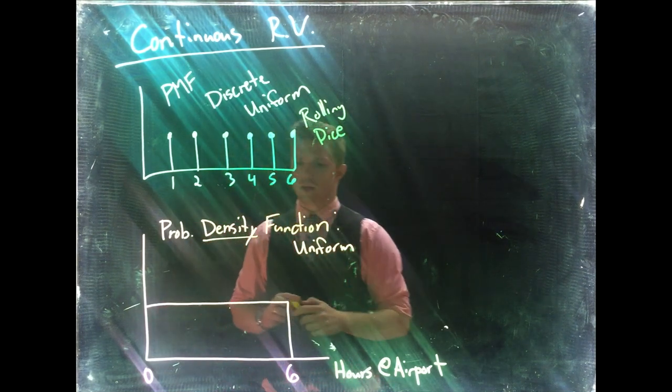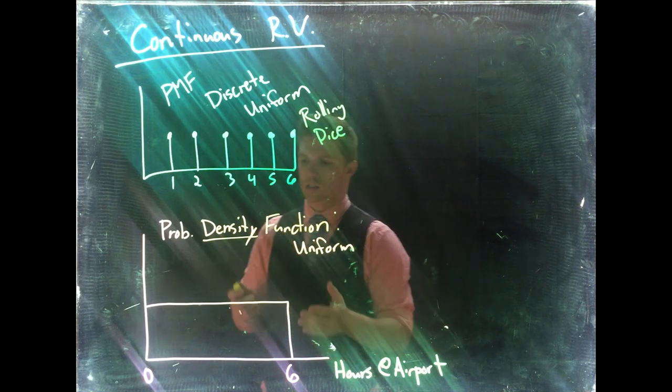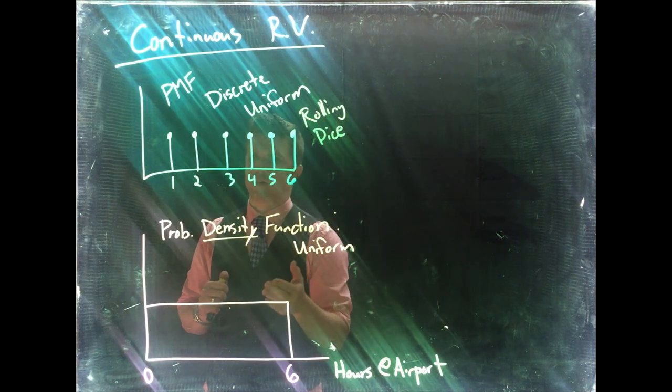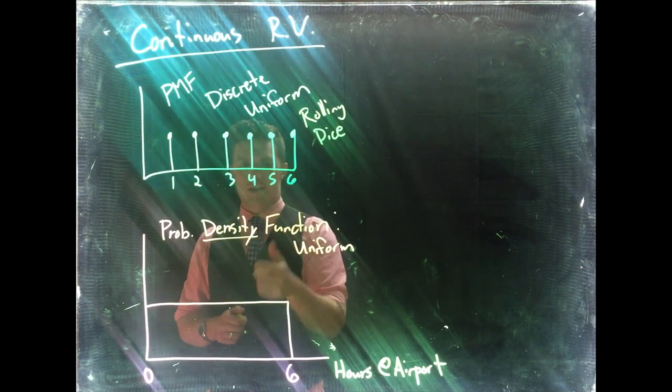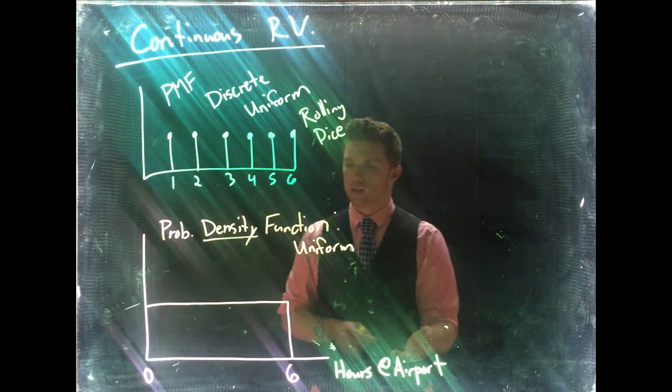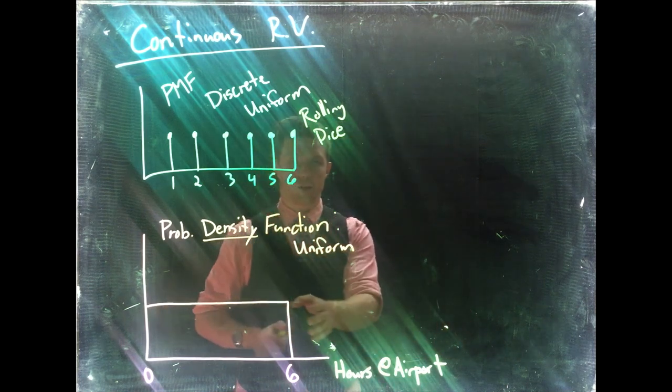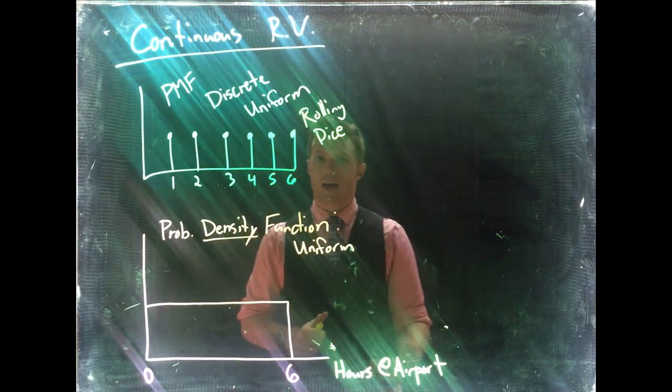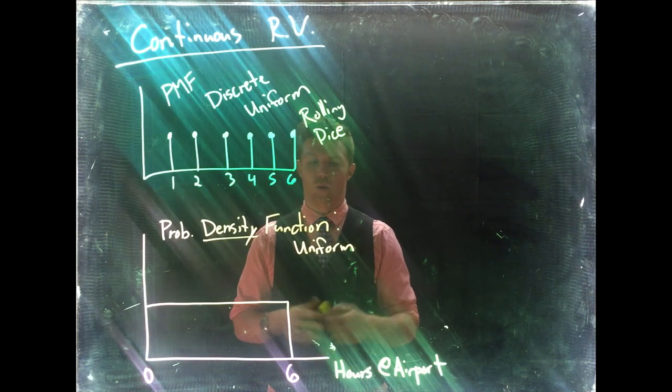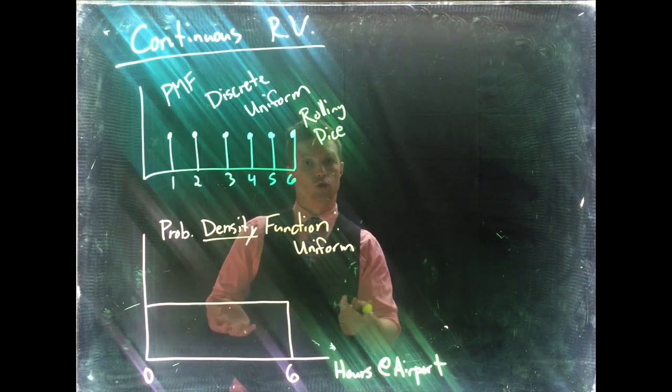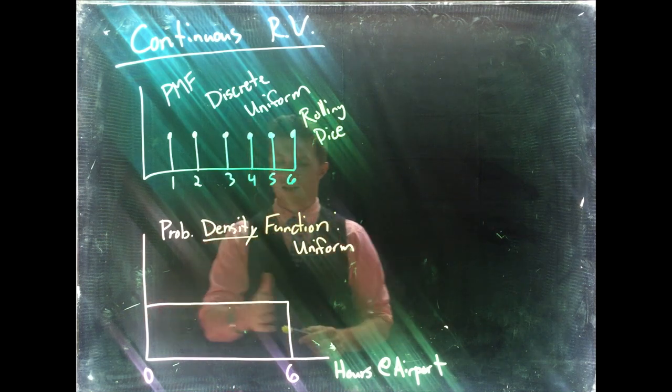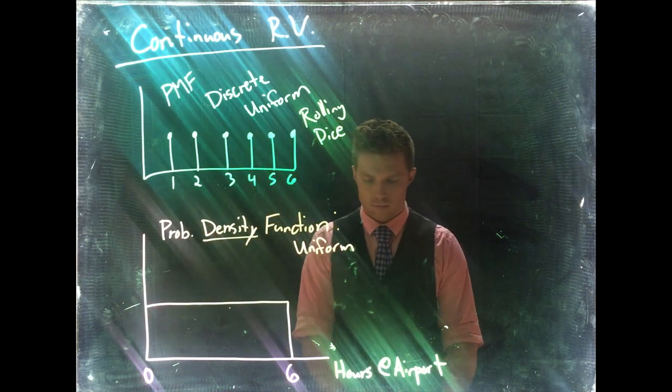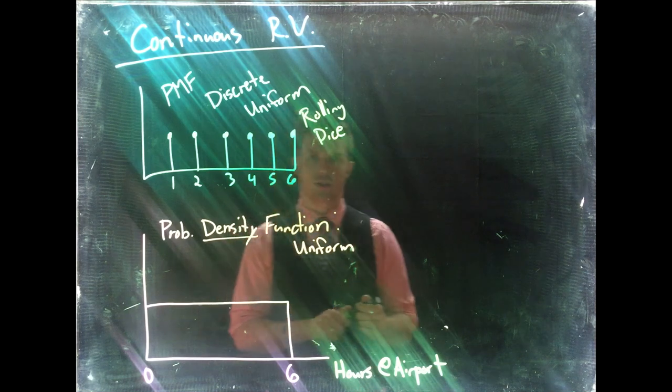Okay so in order to do this we need to go through and actually look at like what are some of the differences. So here when we roll the dice we could only get a specific value. Down here when we are waiting for hours at the airport, we could be any value in between zero and six. I could wait one hour, I could wait 1.021 hours, it really doesn't matter. I can be any value between my ranges.